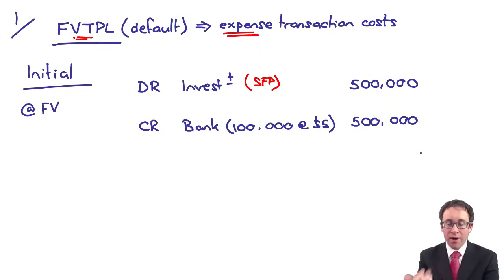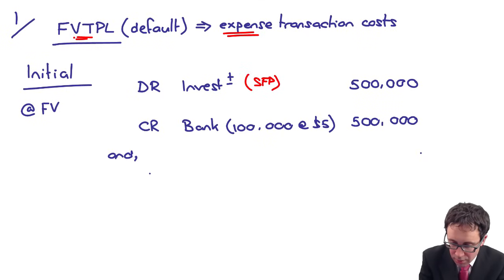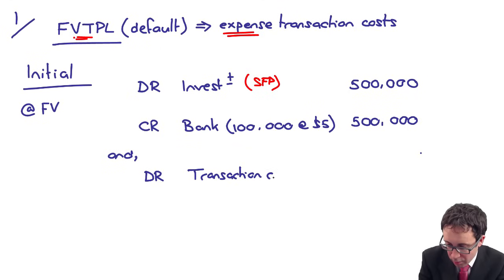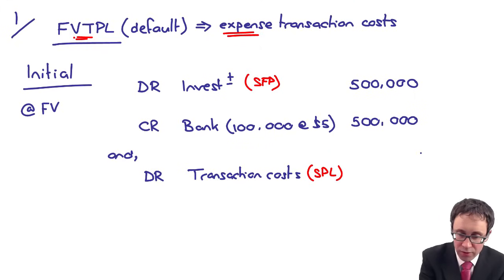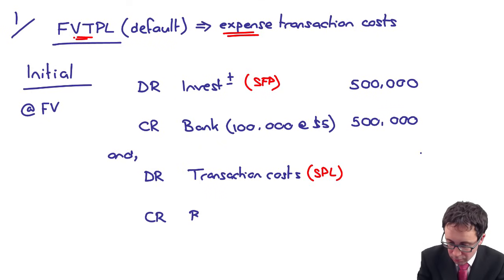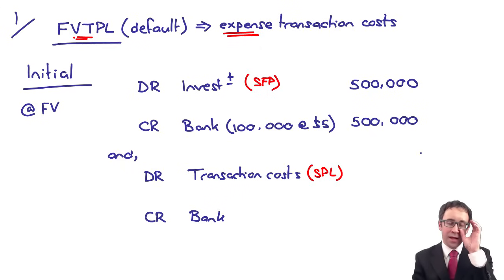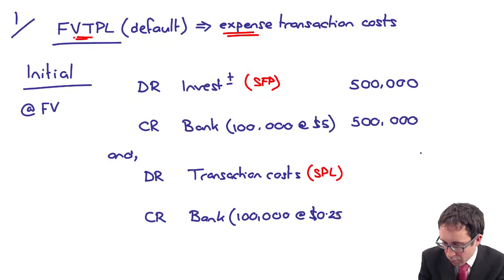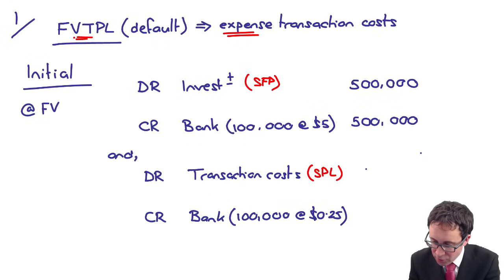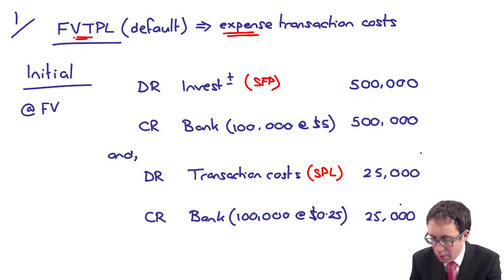Then we also pay the transaction costs. There will be a debit for your transaction costs going immediately to the statement of profit or loss — that's $25,000 — and then you credit the bank. The reason we expense them is because it is fair value through profit or loss. Hopefully everybody's happy with that.